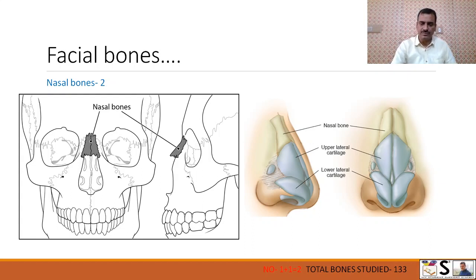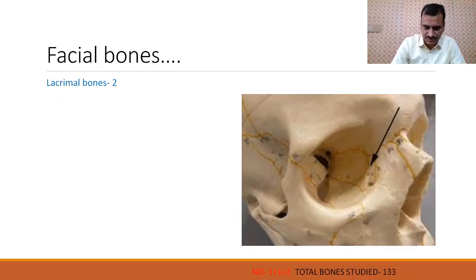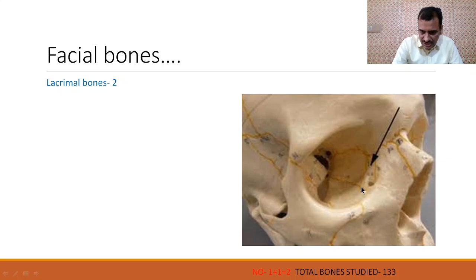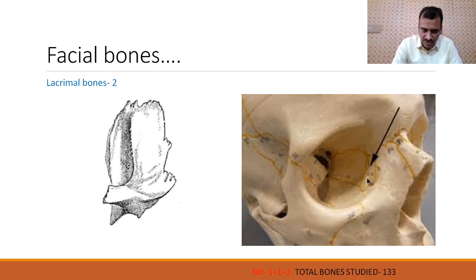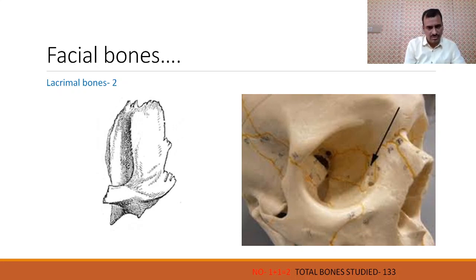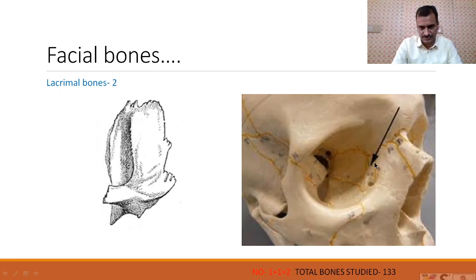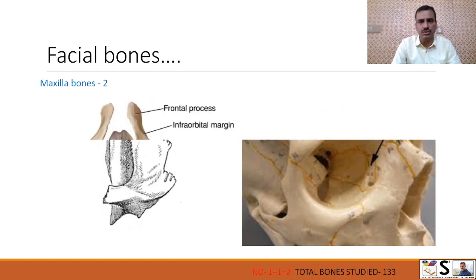After nasal bone there are lacrimal bones. The lacrimal bone is inside the orbital cavity. It is a flat type of bone and two in number — one on the right side and one on the left side inside the orbital cavity. Total bones studied remain 133.